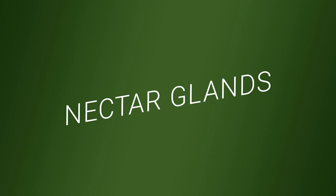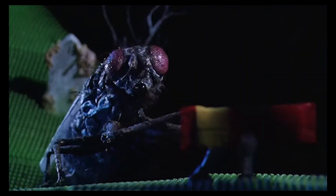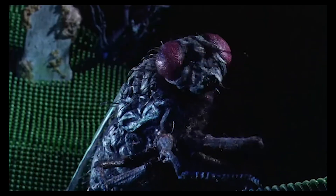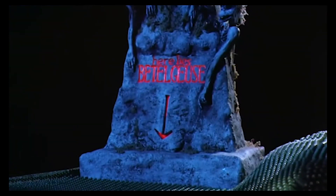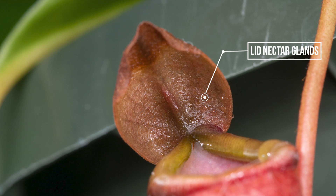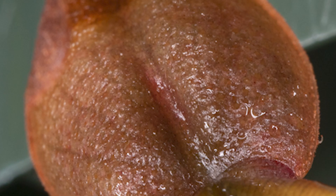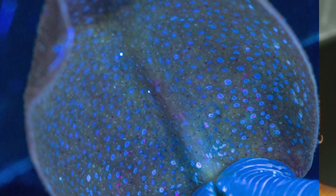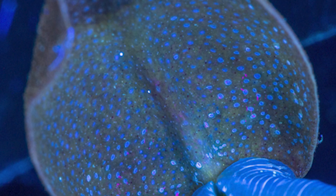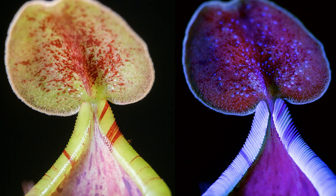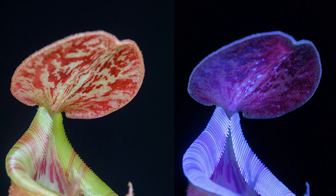Now let's talk about the nectar glands — the way the plant attracts insects. Under the lid, there are always nectar glands. They don't really show to us, but if you look under UV, it's pretty obvious. Fantastic picture — it's really like stars. The plant really wants to show where the nectar is, forcing the insect to be upside down just above the pit.